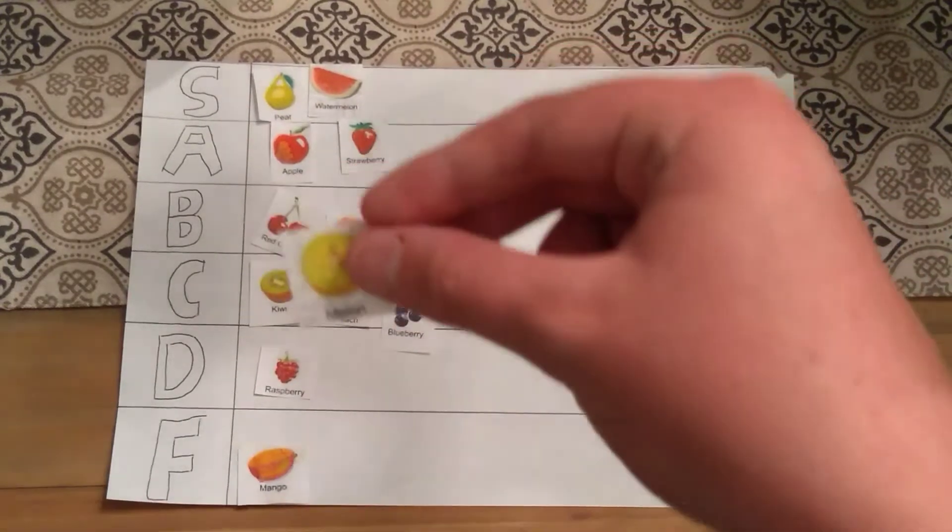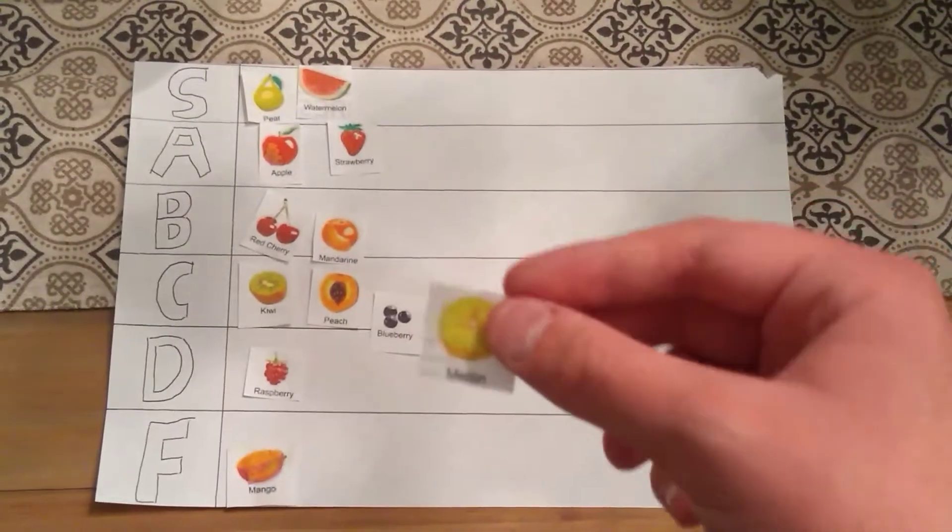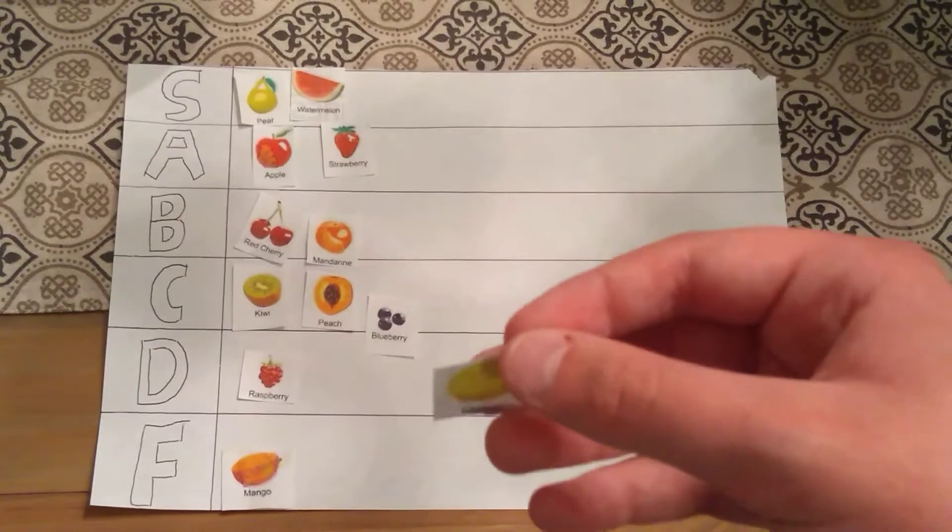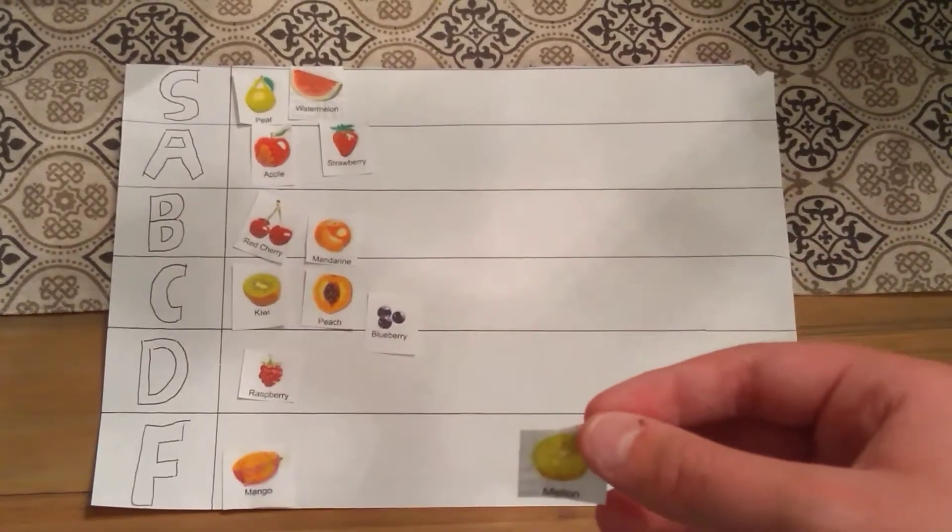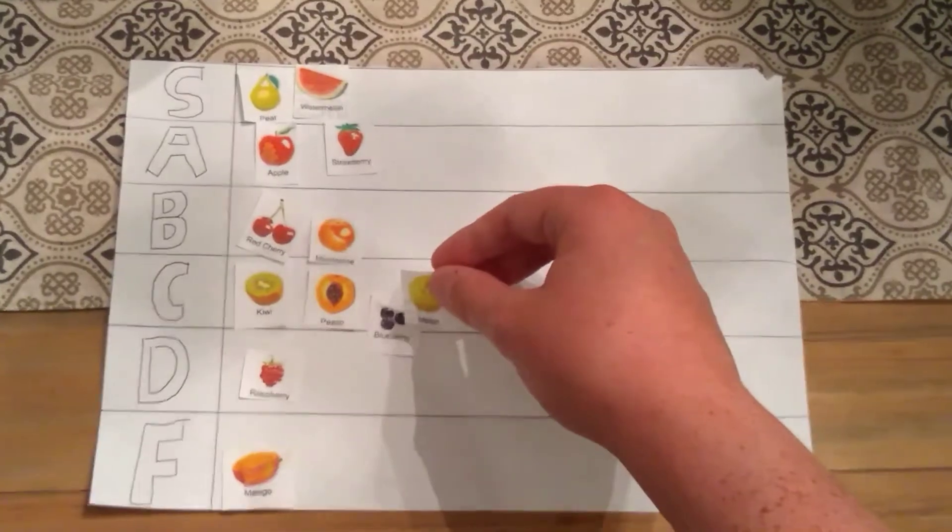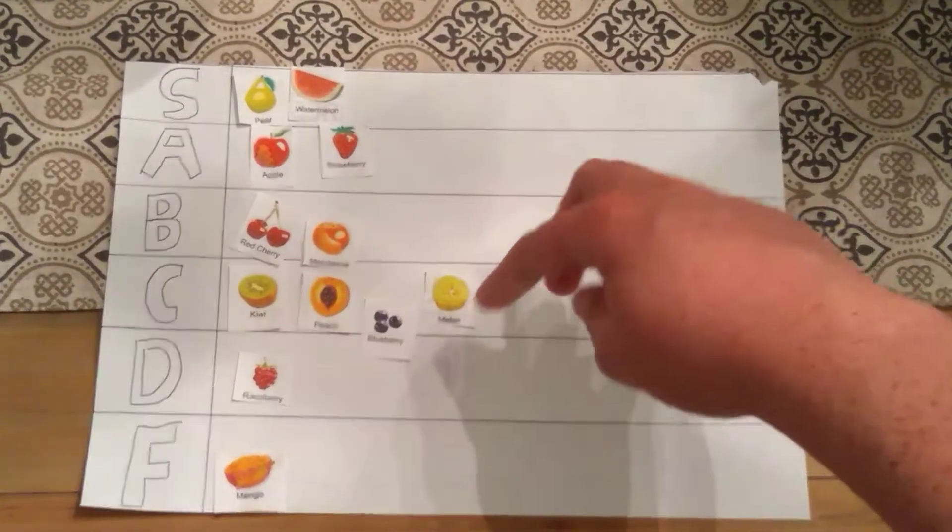Next up, we have melons. You might think, oh, I just saw you like watermelon. You'll surely like melons, right? No. They're garbage. But they're not as bad as blueberries. Which is why I'm putting them in the C tier.